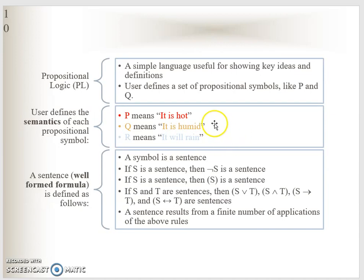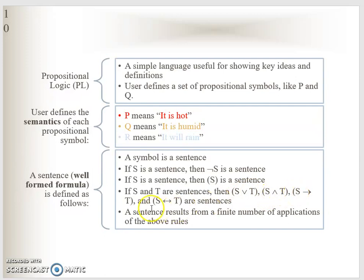Propositional logic (PL) is a simple language to show key ideas and definitions. We define a set of proposition symbols like P and Q. For example, P represents 'it is hot', Q represents 'it is humid', and R represents 'it will rain'. If S is a sentence, then NOT S is also a sentence. If S and T are sentences, then S OR T, S AND T, S implies T, and S equivalent to T are also sentences. We can combine two, three, or more sentences to make new sentences.